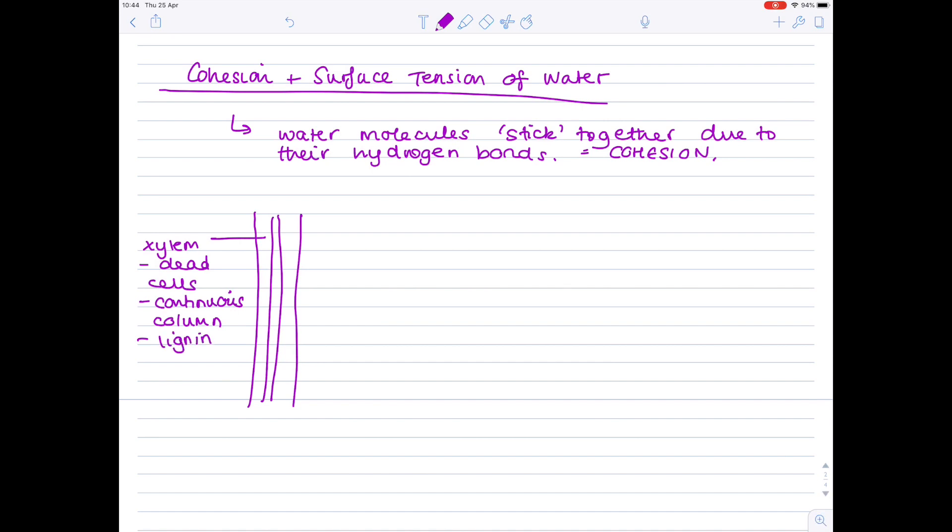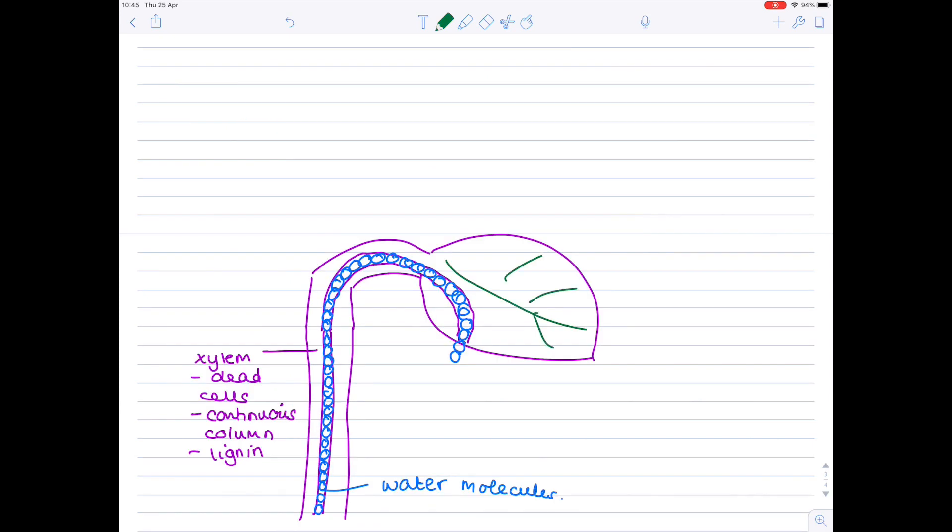So you have these mini drain pipes within the plant stem, and we know that xylem transports water. Now each water molecule is attracted to another water molecule due to hydrogen bonding, so you end up with a column of water within the xylem. Okay, so I don't know why I decided to draw this in purple. Not that helpful.